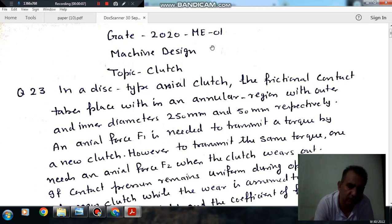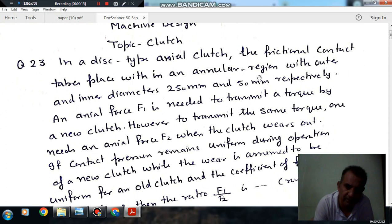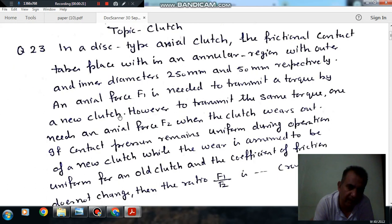Question number 23 from GATE 2001: In a disc-type axial clutch, the frictional contact takes place within an annular region with outer and inner diameter 250mm and 50mm respectively.